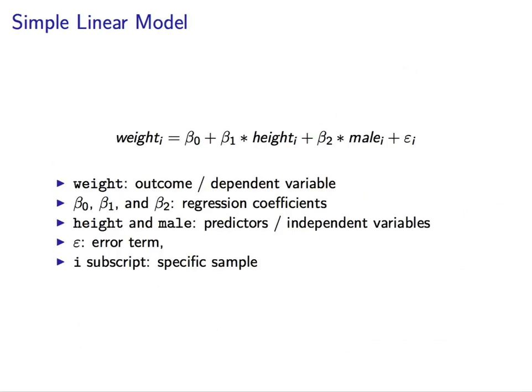So weight is our primary outcome, or dependent variable. I'll probably use those terms interchangeably. Beta 1, beta 2, and beta 3 are our regression coefficients. Height and male are our predictors, or our independent variables. And epsilon represents the error term, or the variability in our sample. And the i subscript is going to indicate a specific individual, a specific sample in our data set.